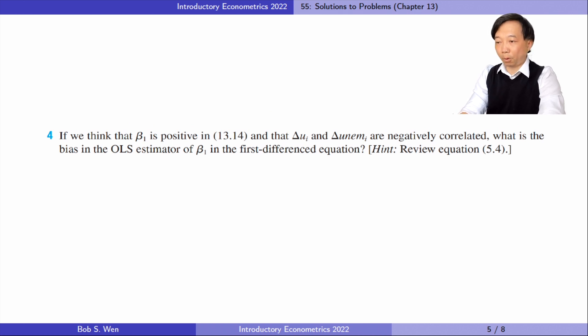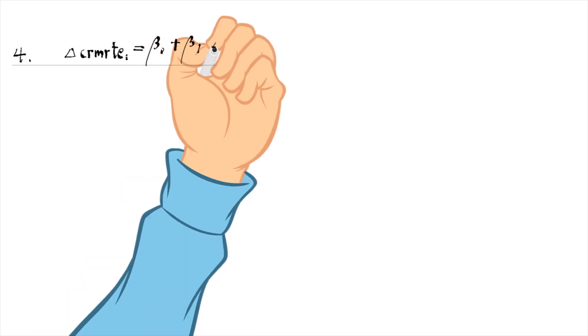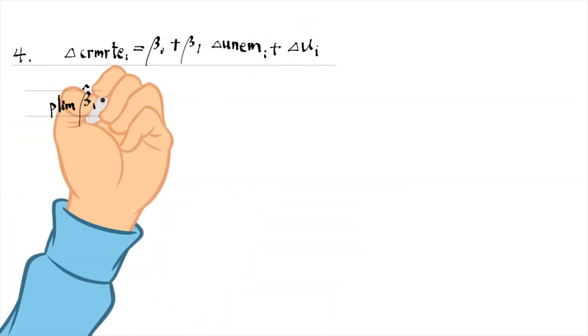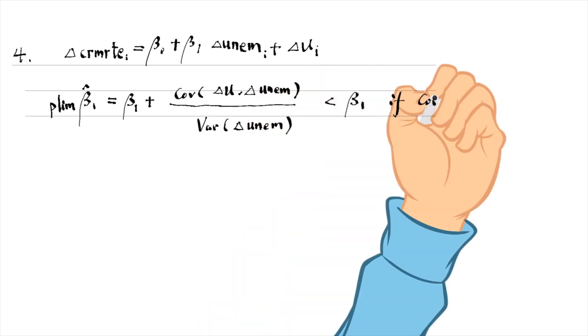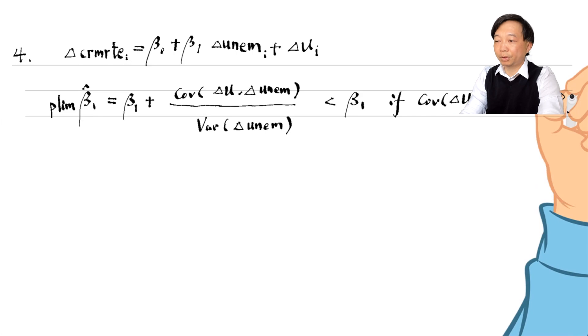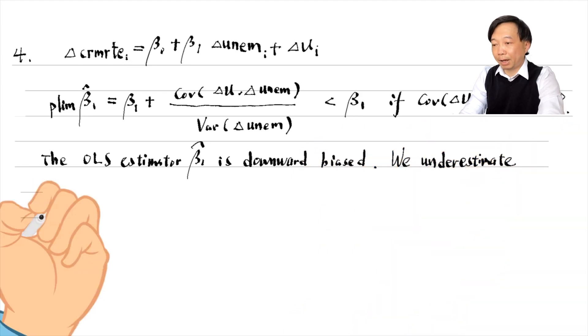Let's go to problem 4. If we think that beta1 is positive in equation 13.14 and that delta mu and delta unemployment are negatively correlated, what is the bias in the OLS estimator of beta1 in the first difference equation? The bias in the OLS estimator depends on the correlation between delta mu and delta unemployment. If it is negative, then the bias is negative. So the OLS estimator beta1 hat is downward biased. We underestimate the unemployment effect on the crime rate.